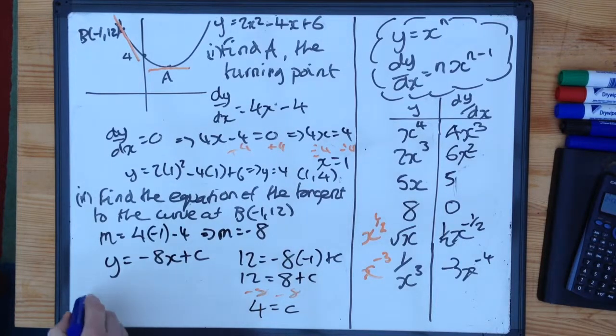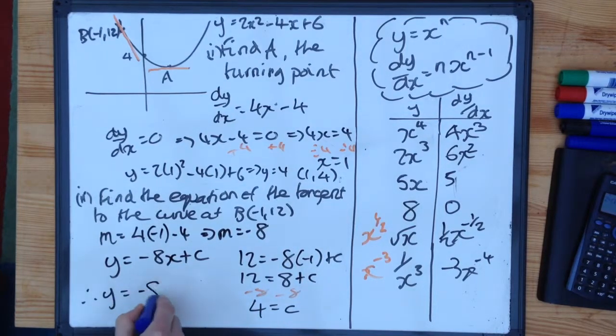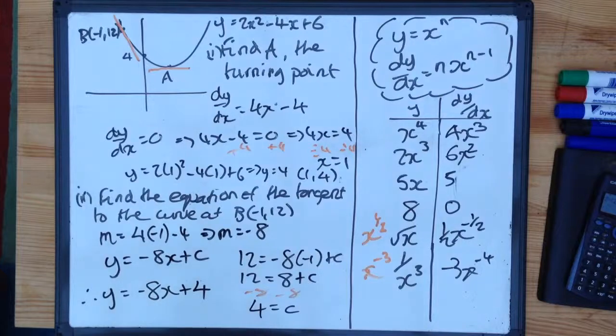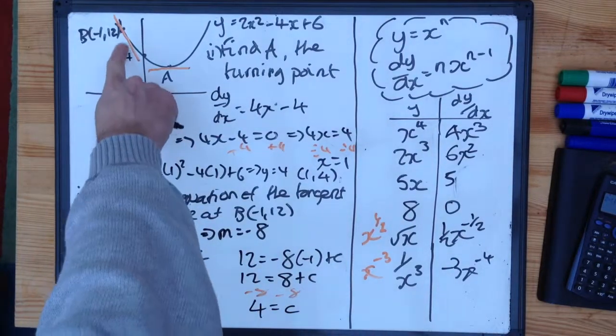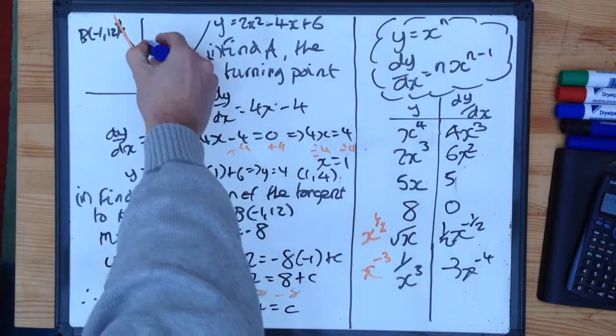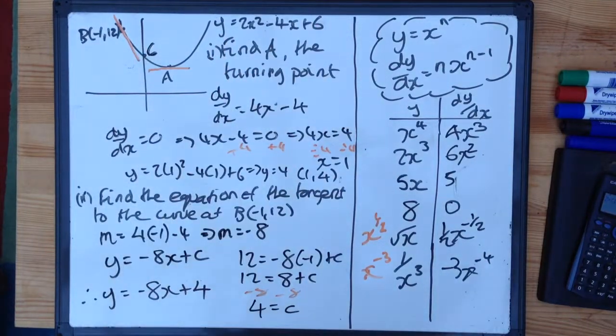So that goes in there. So my equation is y is minus 8x plus 4. The more observant of you will have noticed that that really shouldn't be 4 there. It should be 6.